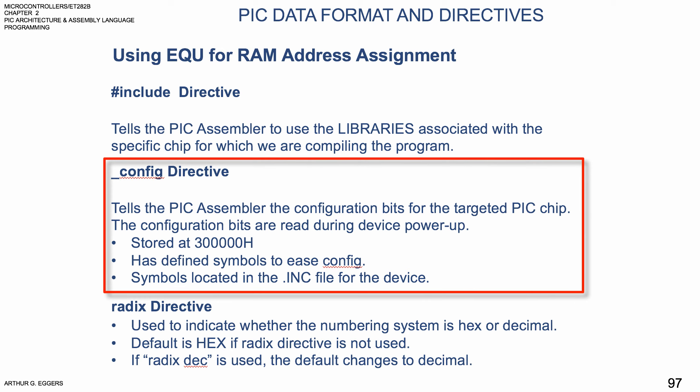The underscore config directive tells the assembler the configuration bits for the target PIC chip. It's important to use the correct underscore config directive, because incorrect use may make the chip unusable. The configuration bits are read during power-up of the PIC device and are stored at location 300000 hex. Microchip has defined the underscore config directive symbols to ease configuration, and these symbols are located in the .inc file for the device being used.